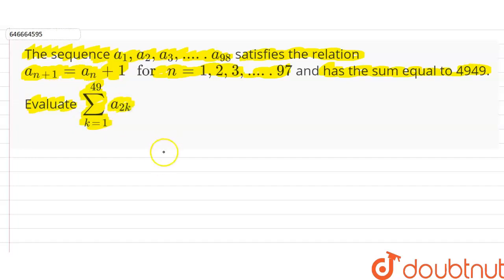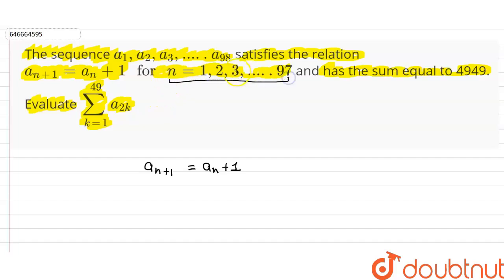We have been given the relation that a(n+1) = a(n) + 1 for values n equal to 1 to 97. Let's put in values — if we put n equal to 1, it gives a2 = a1 + 1.